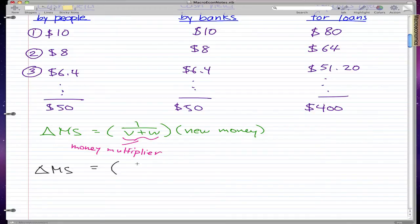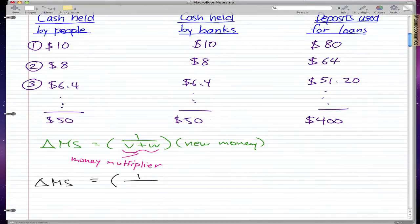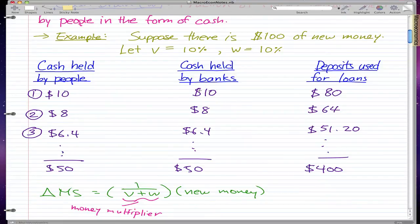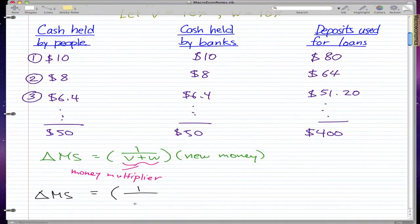Using the same values from the example, we have change in MS equaling 1 over 0.1 plus 0.1, because it's 10% each. So 0.1 plus 0.1 gives us 0.2. This equals 1 over 0.2, which equals 5. We take that and times it by $100 of new money, and we get $500.